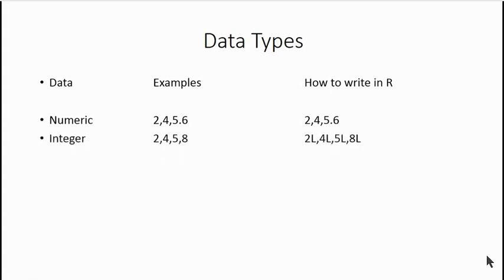The second type of data in R is called integer data. Integer data is that data which doesn't have a point in it — that is, it's not fractional. It's a whole number. For example, 2, 4, 5, 8 — these are whole numbers, these are integers. They are not considered as numeric in our program. 5.6 is numeric; however, it cannot be considered as integer.